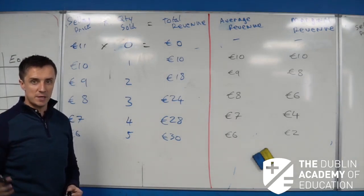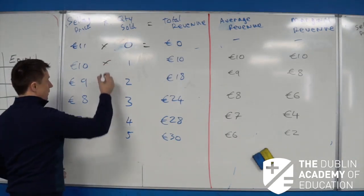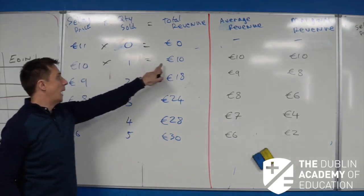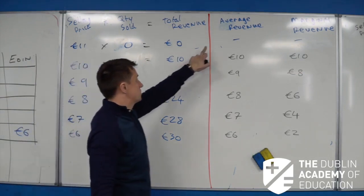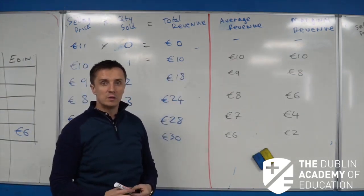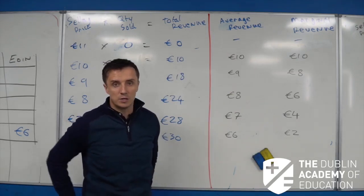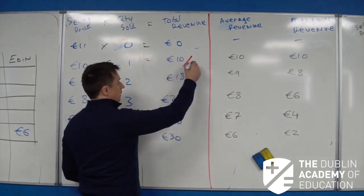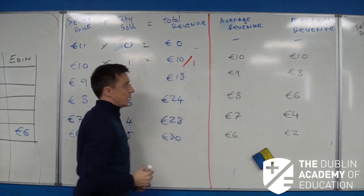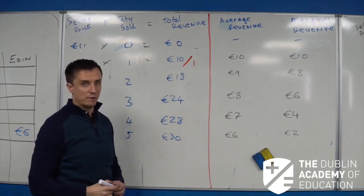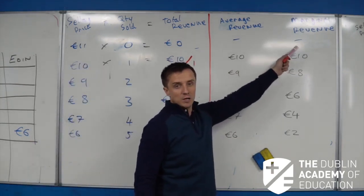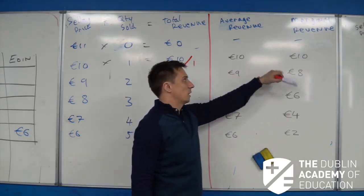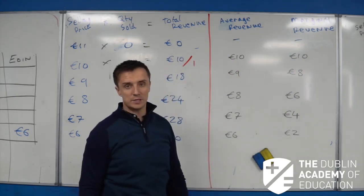If I drop the price down from 11 to 10 euro, one person — Alan — is happy to buy them. So I'm selling at 10 euro, Alan will buy one, and my total revenue will be 10. My average revenue — total revenue divided by quantity sold — is also 10 euro. My marginal revenue, which is the increase in total revenue from the sale of an extra unit, goes from zero up to 10.